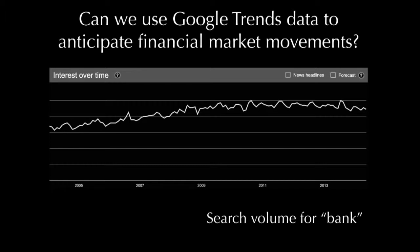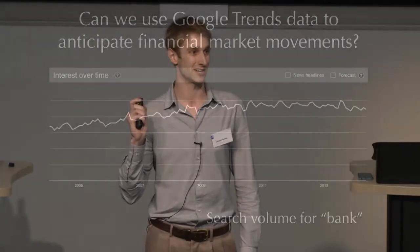Here's an image of a Google Trends time series — just an example — for the word 'bank.' You can see that it may be non-stationary and has some trends. We're not exactly interested in the absolute search volume for some word, but rather in how changes in these search volumes might be related to subsequent financial market movements. So we have to difference this time series somehow.